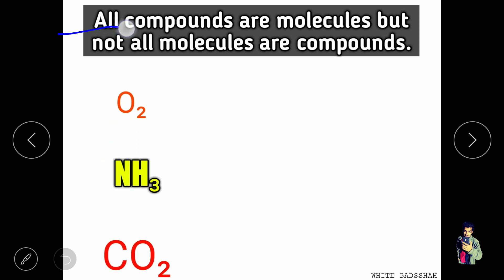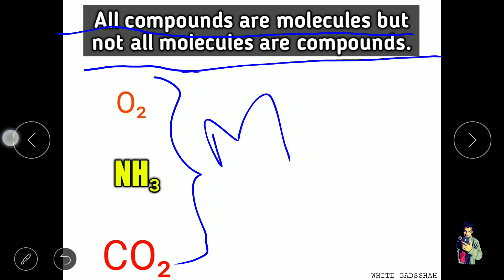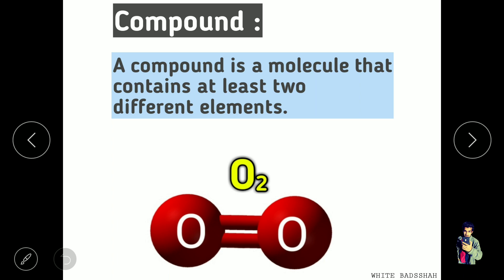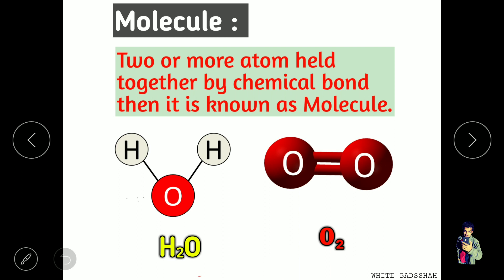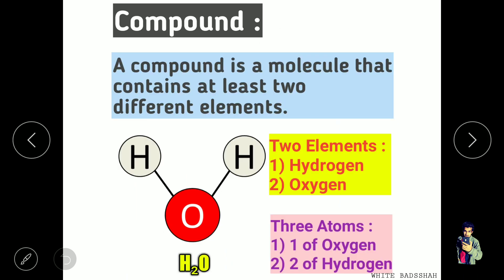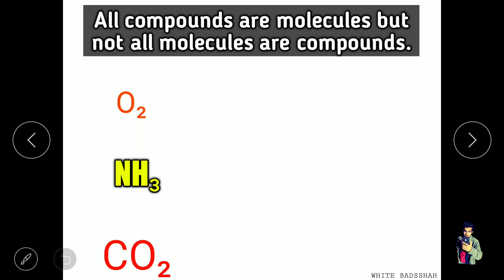Now remember this important line: all compounds are molecules, but not all molecules are compounds. Every combination of atoms is known as a molecule, but to be a compound, a molecule must contain two or more different types of elements. A molecule can have similar or different elements, but a compound specifically requires two or more different elements.